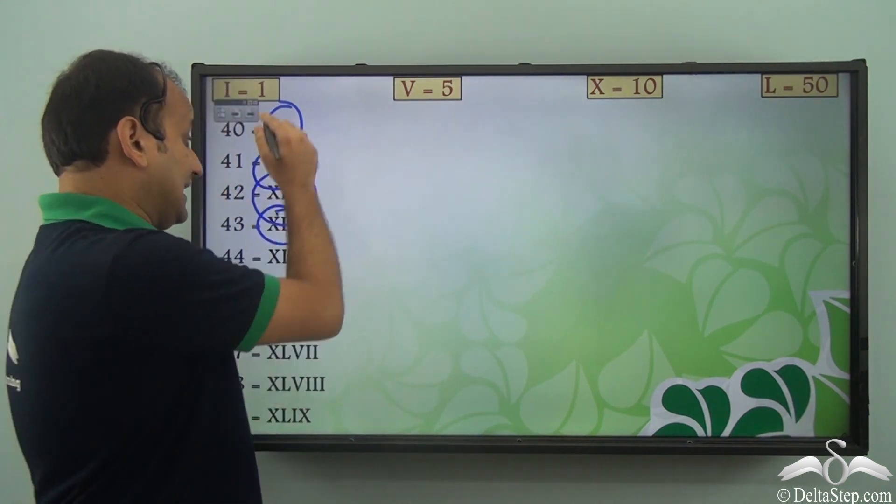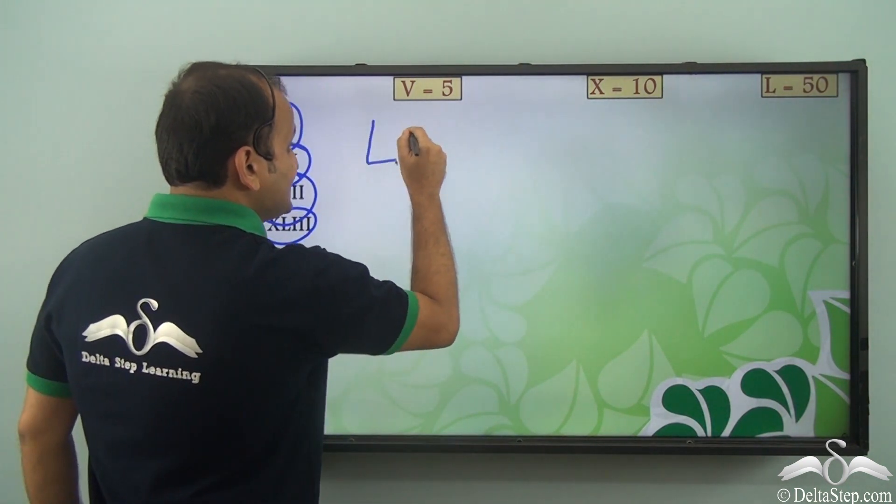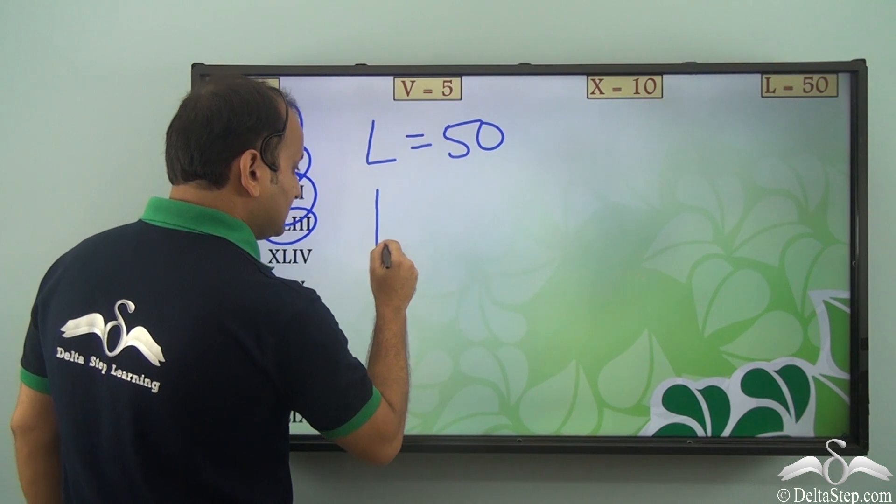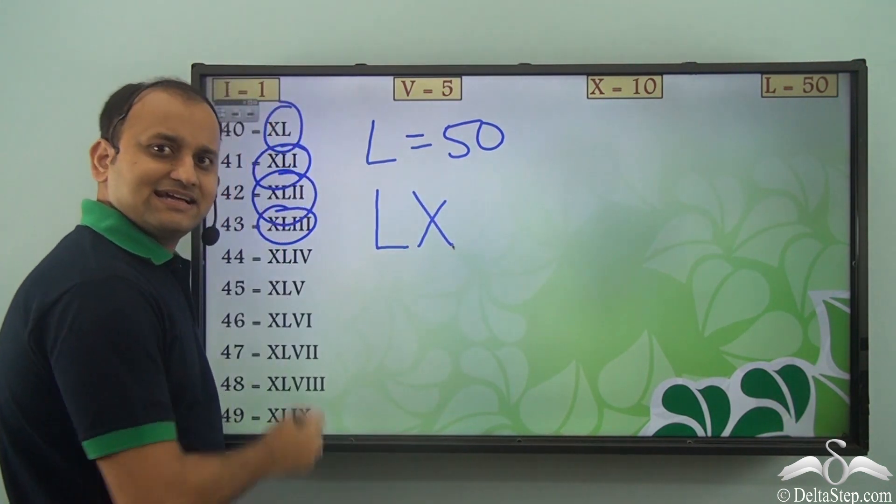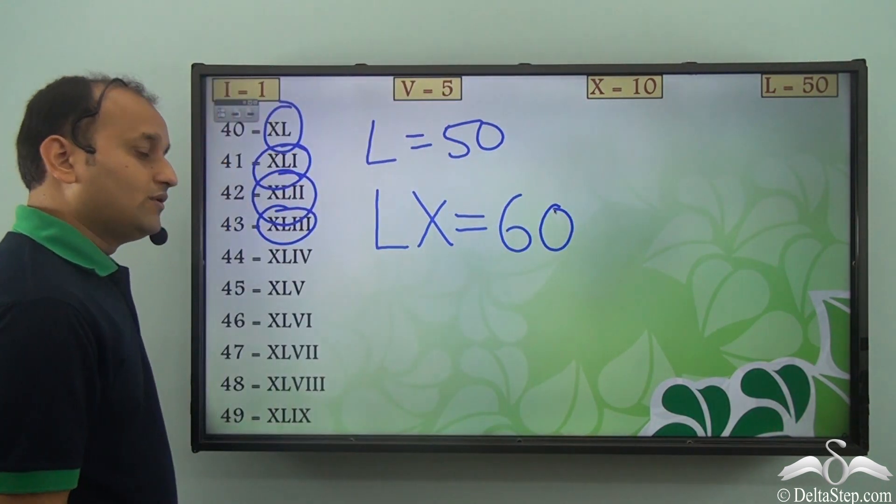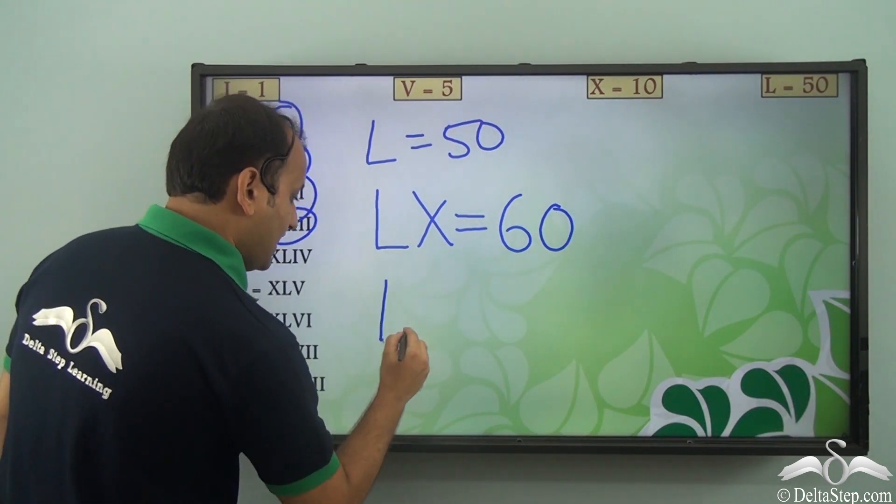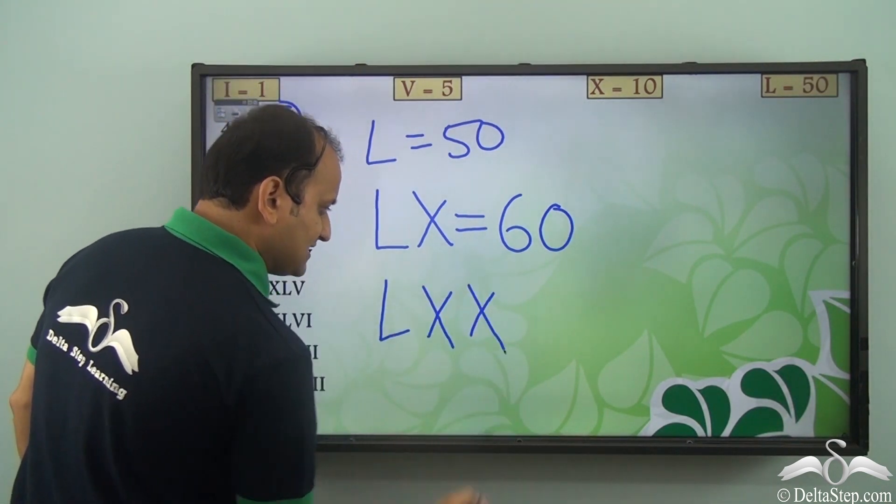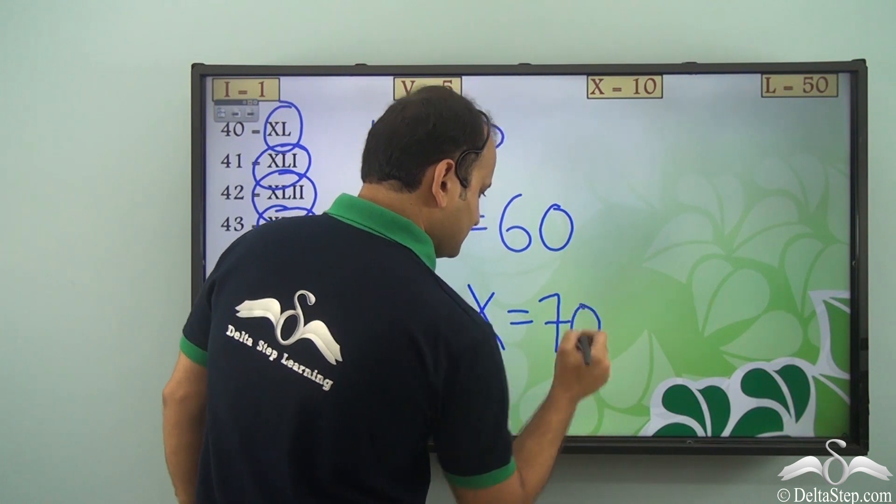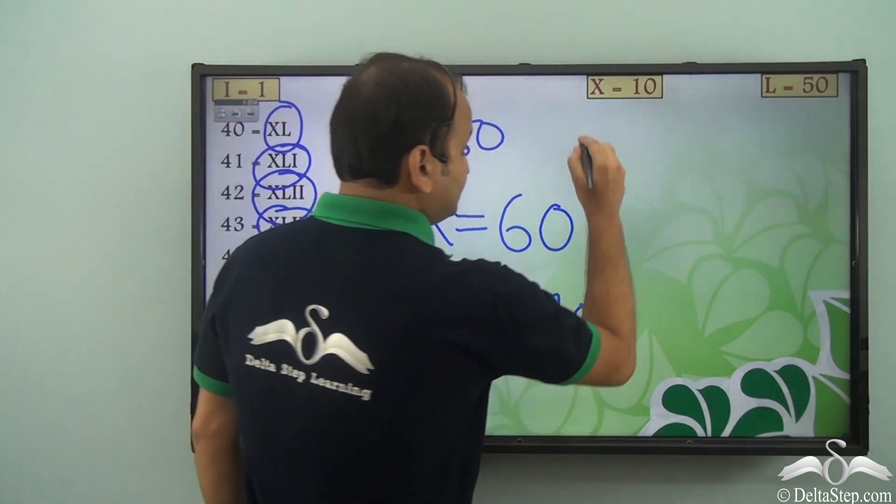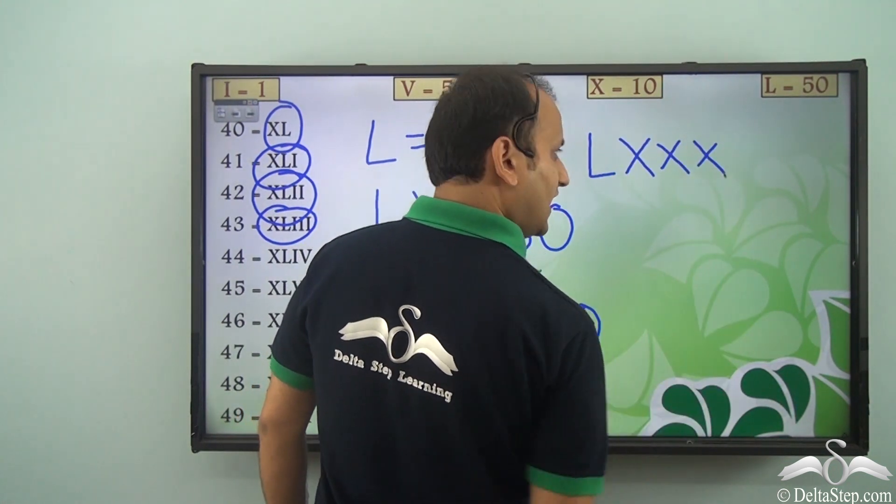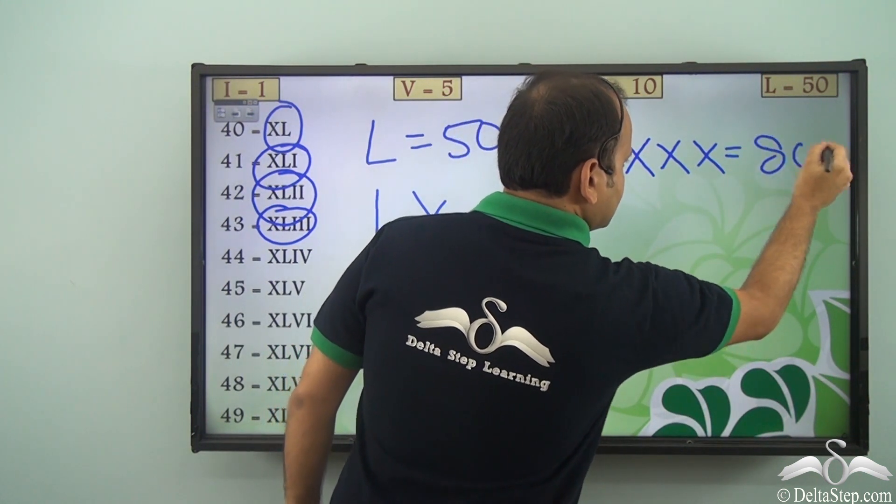Now again in this case we know that L is 50. Now how do we write 60? It's very simple. L plus X, that is 50 plus 10, is 60. Now what about 70? L plus X plus X, that is 50 plus 10 plus 10, which is 70. Now what about 80? 90?